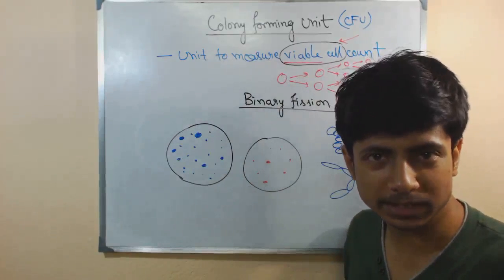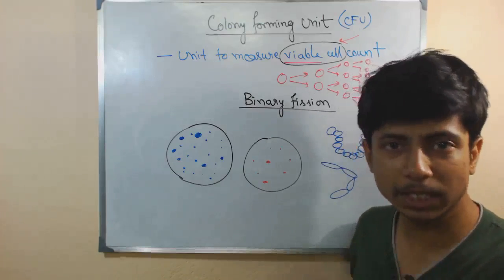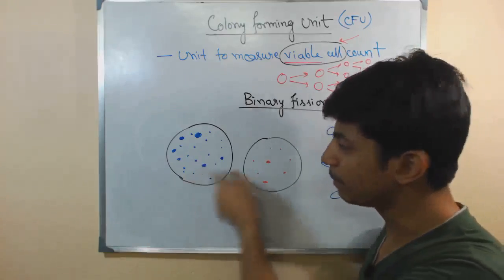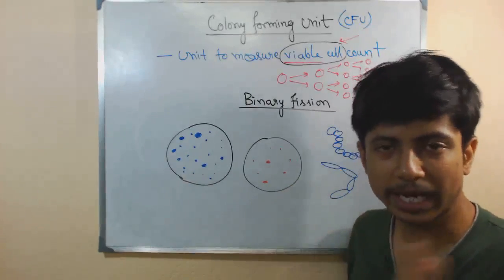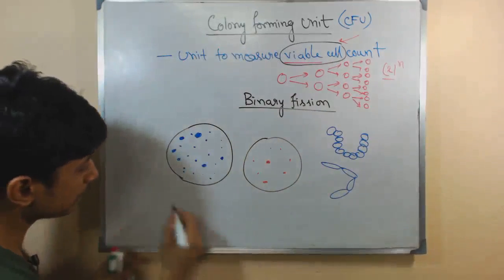For most experiments we need viable culture which is continuously growing and dividing. We can check it by plating it to see what kind of Colony Forming Unit we get.